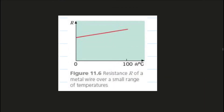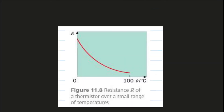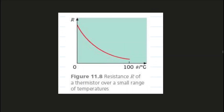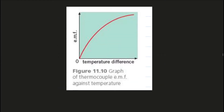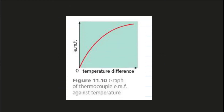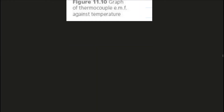This graph shows how the resistance of a metallic wire changes with temperature. This graph shows how the resistance of a thermistor changes with temperature. This graph shows how the EMF in a thermocouple thermometer is produced versus the difference in temperature between its two junctions.